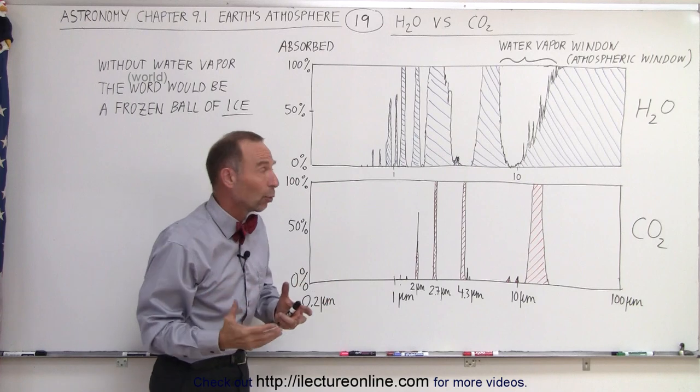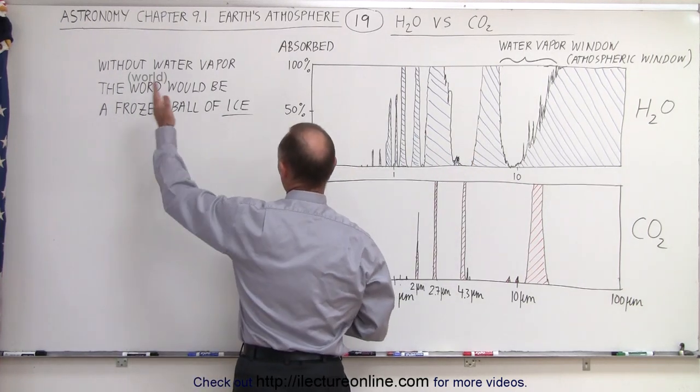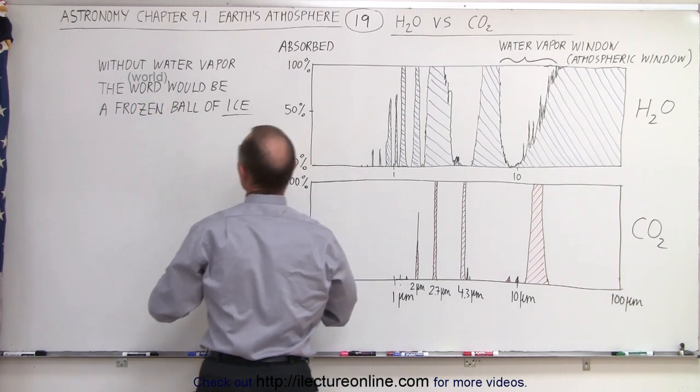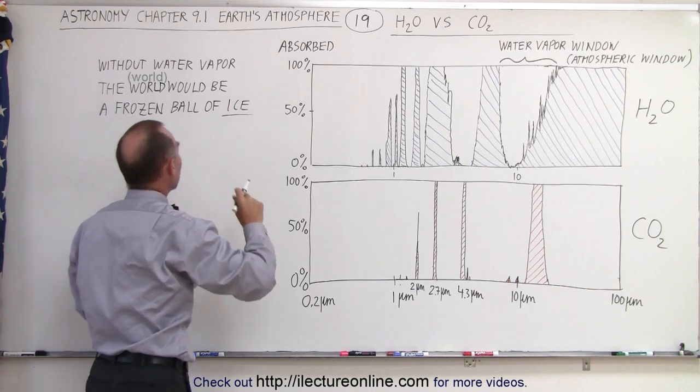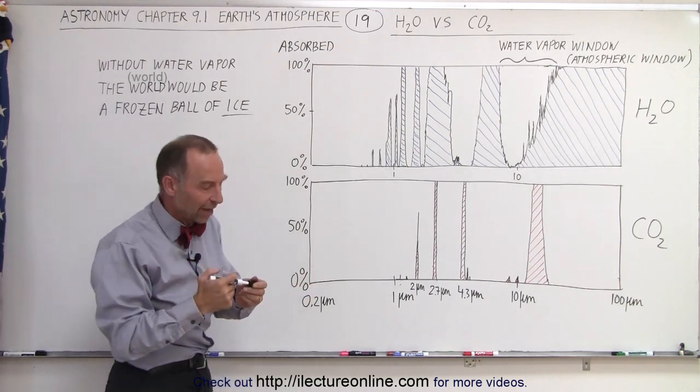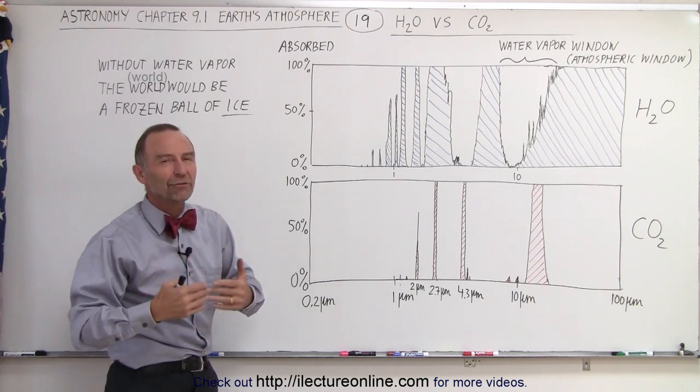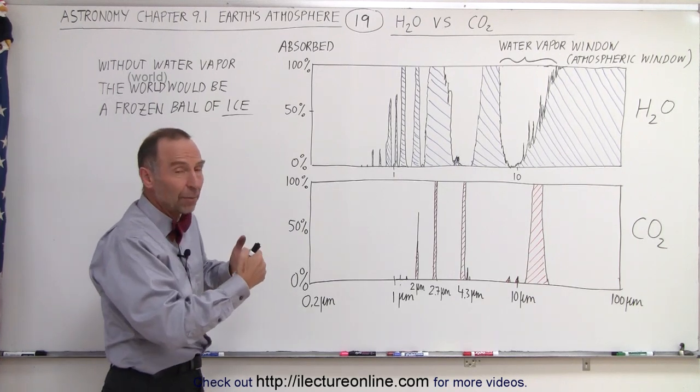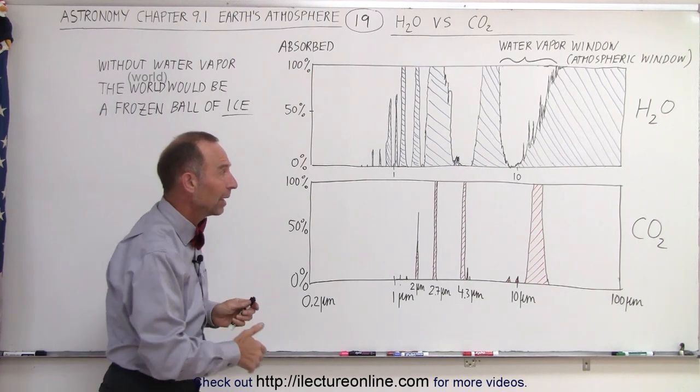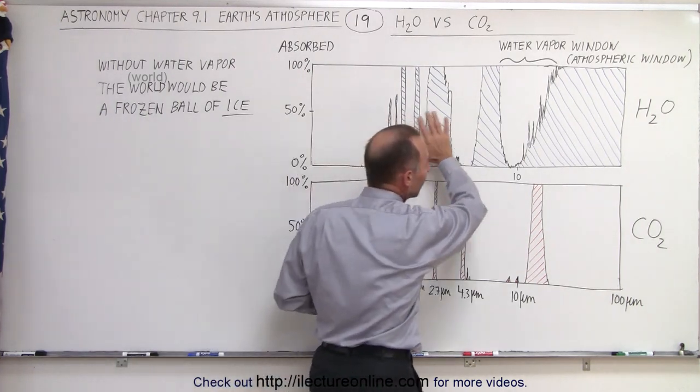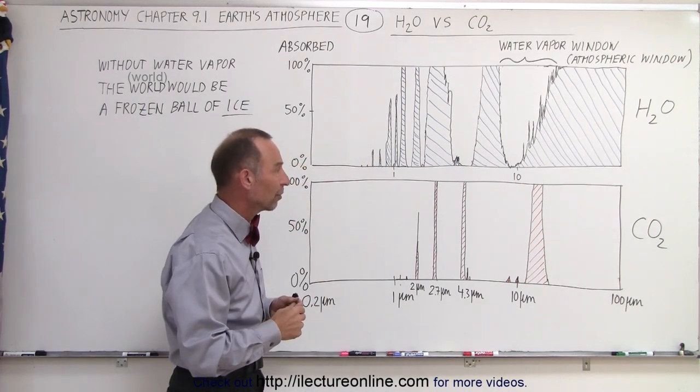You can see that water vapor does a lot more than carbon dioxide as far as keeping the earth warm, and it's a good thing because if it wasn't for the water vapor, without water vapor the world would be a frozen ball of ice. Simple as that. Carbon dioxide simply cannot do enough to keep us comfortably warm. It's a combination of both the carbon dioxide and the water vapor that does the job, and by far water vapor does the bulk of the work.